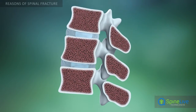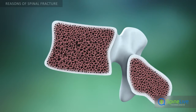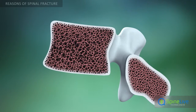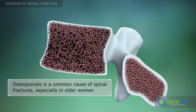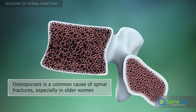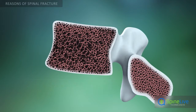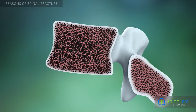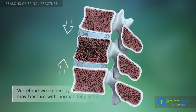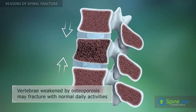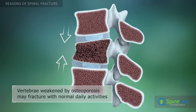In addition to trauma, spinal fractures can also occur due to various disease processes of the vertebrae. Often, fractures occur due to severe osteoporosis, a progressive loss of bone mass most often seen in postmenopausal women. The vertebrae become brittle and can collapse even during normal activity, leading to a spinal fracture.